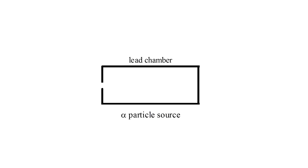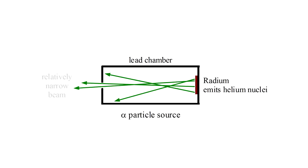They built an alpha particle source using a lead chamber with a window in one wall. On the opposite wall they mounted a radium sample which emitted alpha particles, which we now know are helium nuclei. Most of the particles were absorbed by the lead, but those that made it through the window formed a narrow beam.